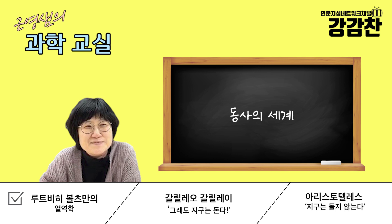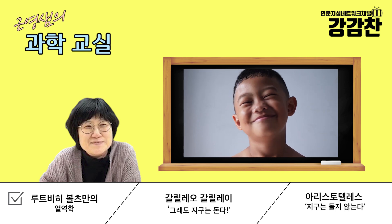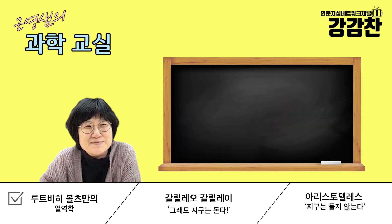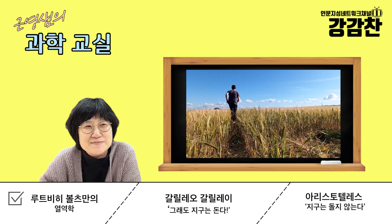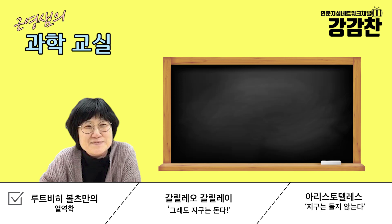'웃는다' 본 적 있으세요? 웃는다 본 적 없죠. 이렇게 찌그러지는 건 본 적 있겠지만 '웃는다'는 동사 자체는 본 적 없다는 거예요. 이상한 나라의 앨리스가 이런 얘기를 하고 있는 건데, '뛴다' 본 적 있으세요? 사람이 이렇게 움직이는 물질은 보지만 '뛴다'라는 동사 자체를 본 적은 없다는 말입니다.